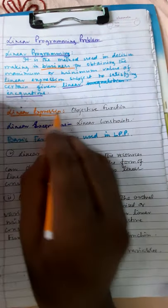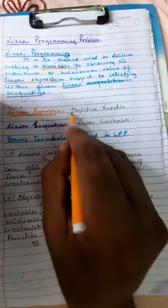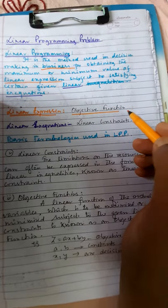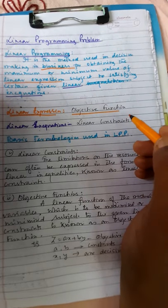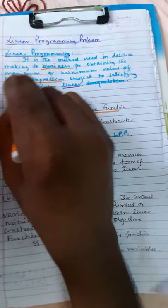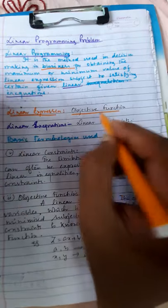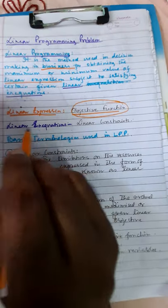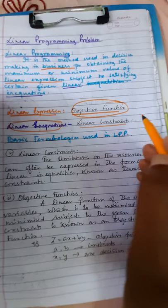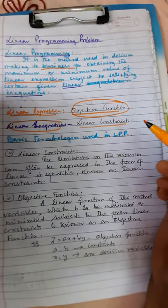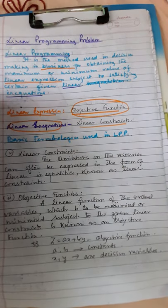What is a linear expression? A linear expression is another way to refer to the objective function. The linear expression is used as the objective function. And linear inequalities are the linear constraints — the limitations. Some linear limitations are there; those limitations are called linear inequalities or linear constraints.